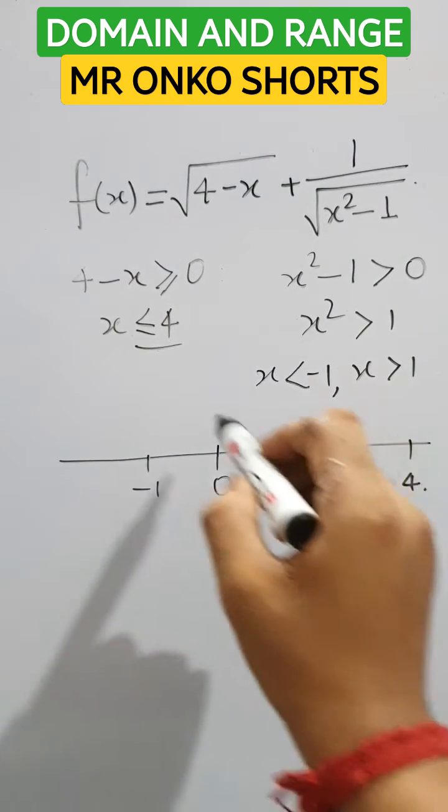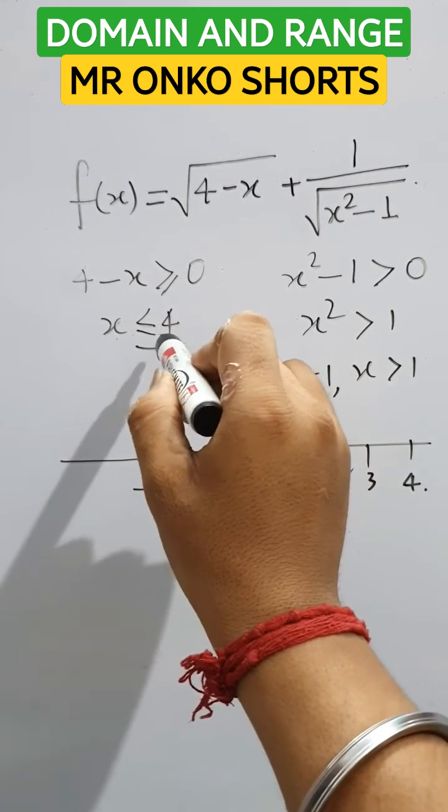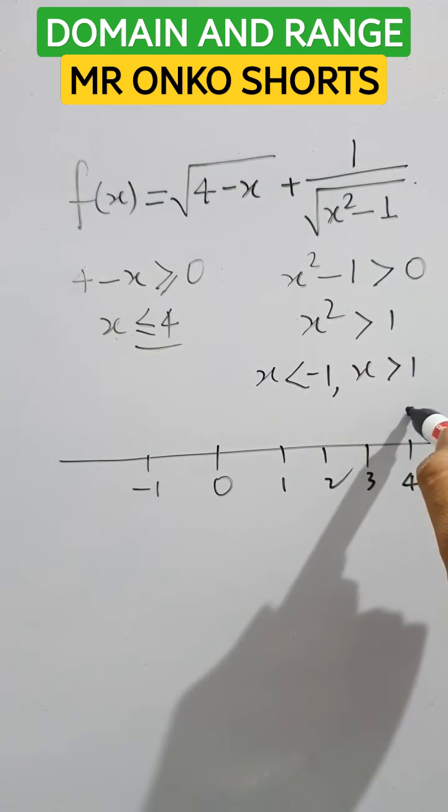3, 4. Now here x is less than equals to 4, so x is less than equals to 4. We have to take the zone.